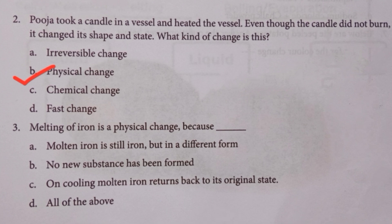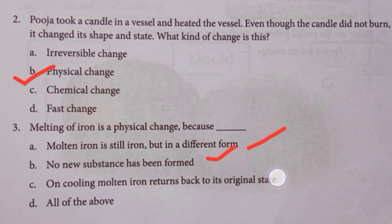Third question: melting of iron is a physical change because molten iron is still iron but in a different form — that is correct. No new substance has been formed — this is also correct. On cooling, molten iron returns back to its original state — this is also correct. So the answer is option D, all of the above.